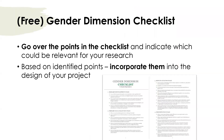Using all of those ideas, I created my own gender dimension checklist specific for MSCA postdoctoral fellowship applications. With this checklist, go over the points and indicate which could be relevant for your research, then think about them and write them into the design of your project and text of your application. This checklist is free and you can download it from Gumroad — I will link it in the description box. Let me give you some examples from the checklist.